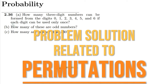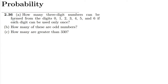Welcome back guys, I hope all of you are fine. This is question 2.36 and it has three parts. In part A, we are asked how many three-digit numbers can be formed from the digits 0 to 6 — that is 0, 1, 2, 3, 4, 5, 6 — if each digit can be used only once.